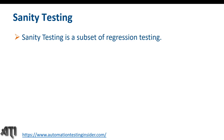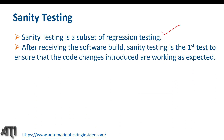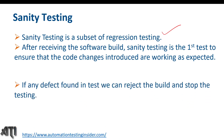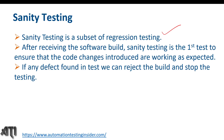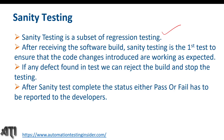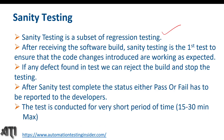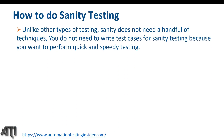Now let's talk about sanity testing. Sanity testing is a subset of regression testing. After receiving a software build, sanity testing is the first test to ensure that the code changes introduced are working as expected. If any defect is found, we can reject the build and stop the testing. After the sanity test is complete, the status — either pass or fail — has to be reported to the developers. The test is conducted for a very short period of time, like 15 to 30 minutes. Since this is unscripted, we do a speedy and quick test and do not need to write test cases.